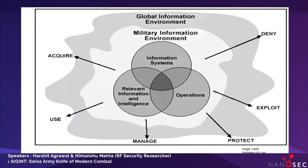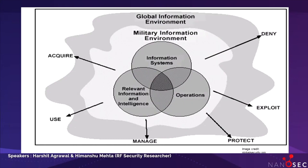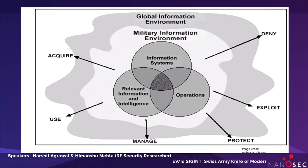Information operations involves six things: acquiring, using, protecting, exploiting, denying, and managing information and information systems. When effectively executed, these critical activities supplement the human skills of battle command, speed, and decision-making — minimizing or eliminating uncertainty, focusing combat power to help protect the force and harness organizational capabilities.